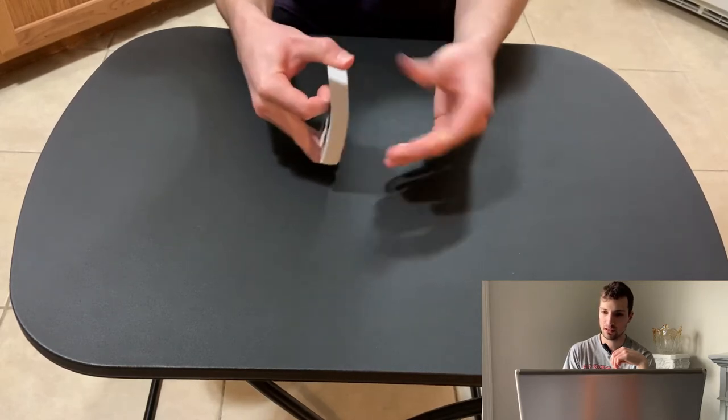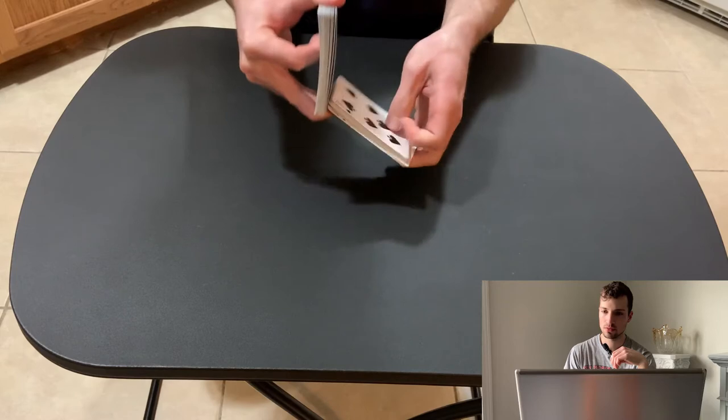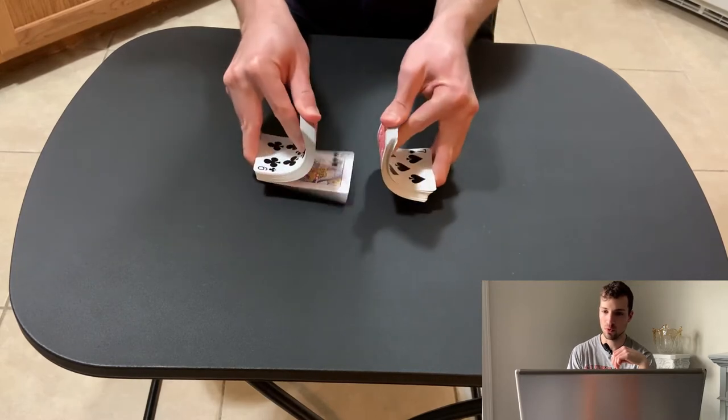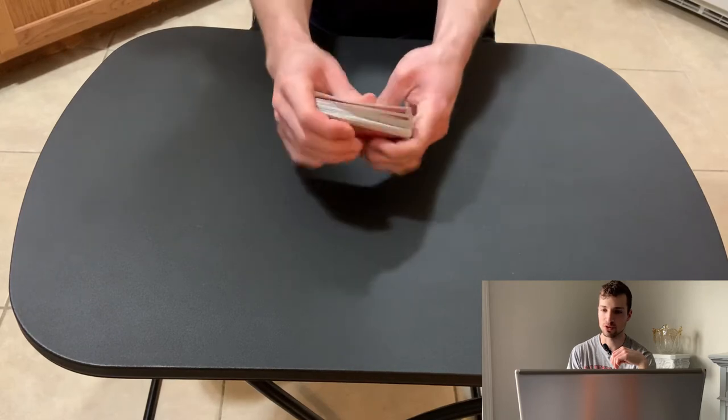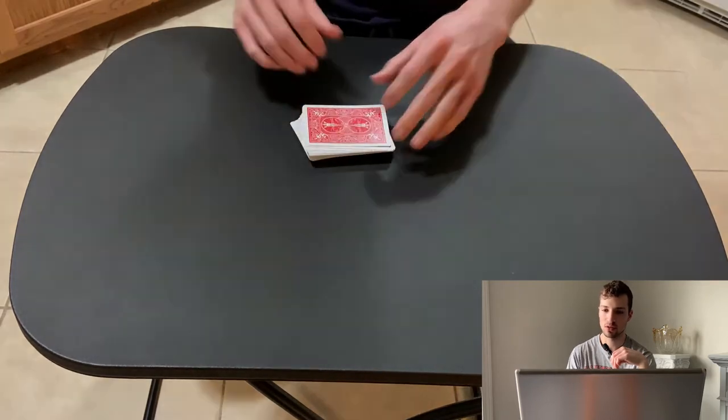So I kind of got them together and I got them bent up for the riffle part but I just for some reason I could not figure out how to actually shuffle them together. I think maybe I was just holding them too tight or something.